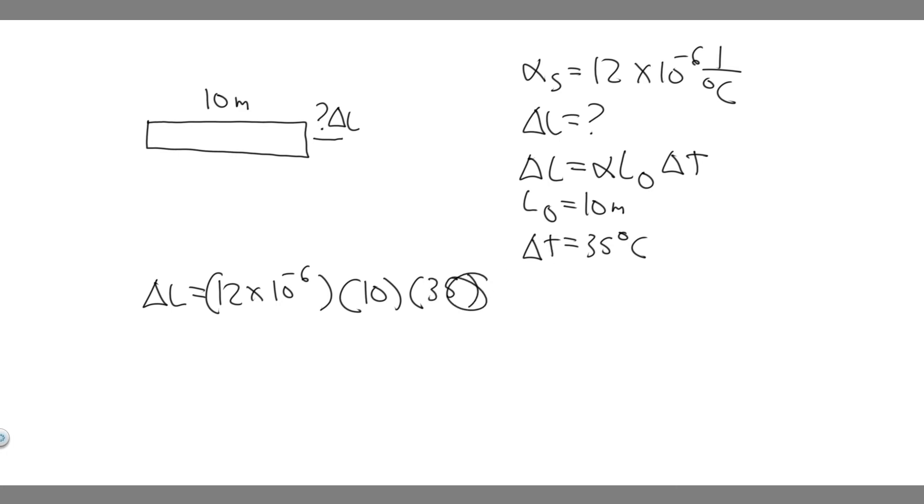So go ahead and plug this in, you're going to do 12 times 10 to the minus 6 times 10 times 35. And so when you do this you're going to get delta L equals 0.0042.